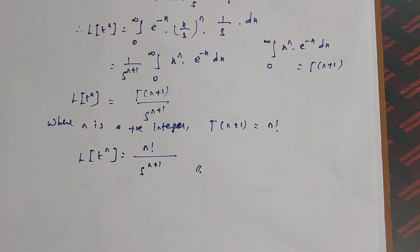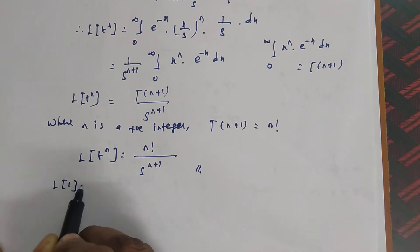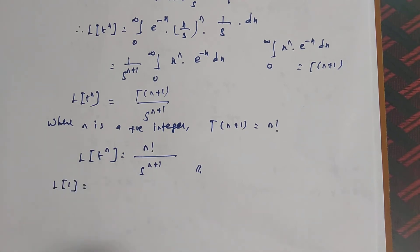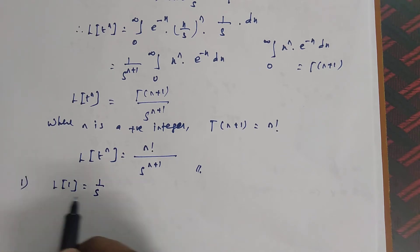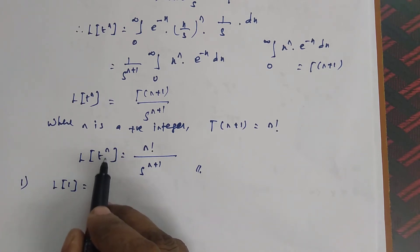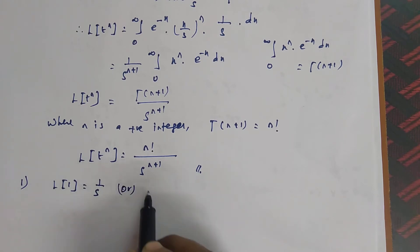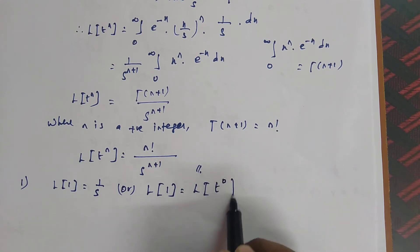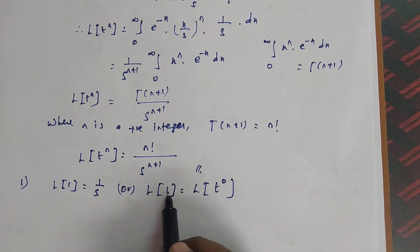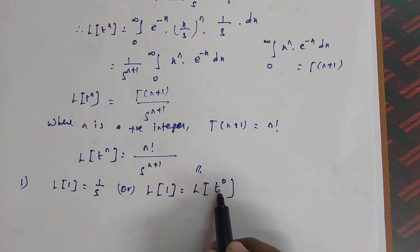Based on this result, let's see some example problems. The first one: what is the Laplace transform of 1? In a previous lecture we proved that L of k equals k by s, so L of 1 equals 1 by s. But now, applying the t power n result, L of 1 can be written as L of t power 0, since anything to the power 0 is 1.